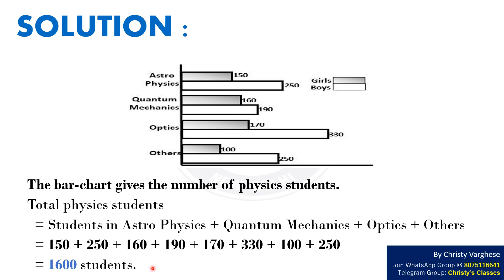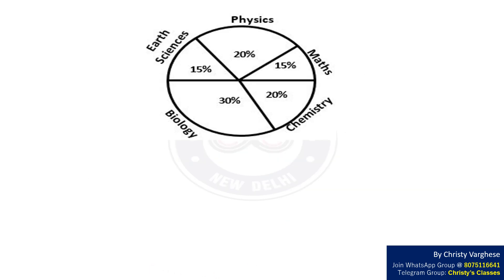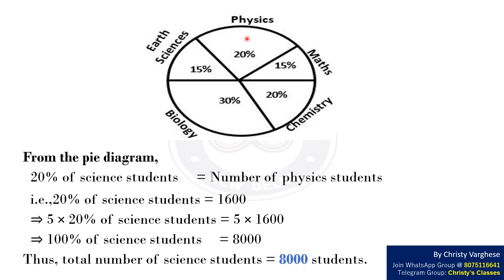That gives 1600 students. From the pie diagram, we see that 20% of science students are physics students. That is, 20% of science students equals 1600. This implies that 5 times 20% of science students equals 5 times 1600, which implies that 100% of science students equals 8000. Thus, the total number of science students equals 8000.